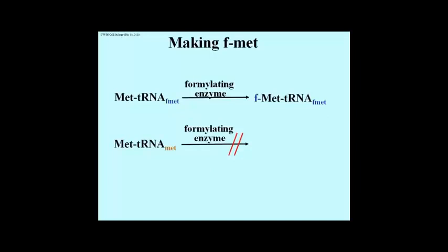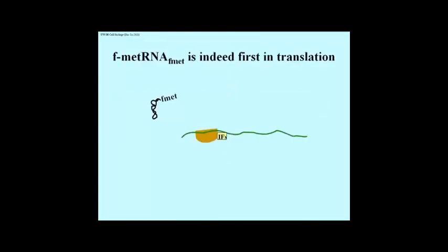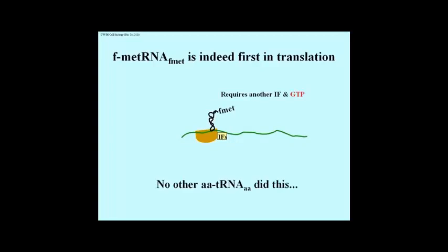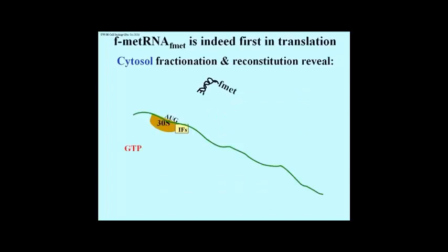There is an enzyme in E. coli which has been isolated, which has the ability to recognize methionine when it's bound to tRNA sub-F-met, and that formylating enzyme catalyzes putting a formyl group on the amino end of methionine. That same enzyme is unable to recognize the methionine bound to tRNA sub-met, which explains why one methionine gets a formyl group but the other doesn't. Formyl methionine tRNA-F-met is indeed the first in translation. That association requires another initiation factor and GTP as well. The GTP and F-met combine with the 30S subunit and the initiation factors present to form an initiation complex.